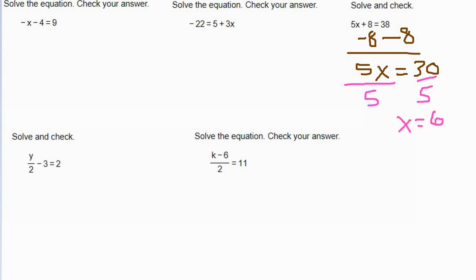Now for all these, we probably should check our answer, but because of time, I will not check all of them. We're going to do the one all the way to the left next. It's negative x minus 4 equals 9. Note this is the same thing as writing negative 1x minus 4 equals 9.